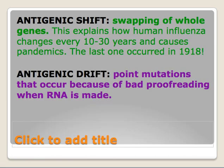In terms of genetic reassortment, there are two different types. One is called antigenic shift, in which there is a swapping of whole genes. This explains how human influenza has changed roughly every 10 to 30 years, causing what we consider pandemics or worldwide outbreaks. The last one for human influenza occurred in 1918 — the 1918 pandemic actually caused World War I to end because more people were dying of the flu than were being killed in the war, with many soldiers dying in the out camps.